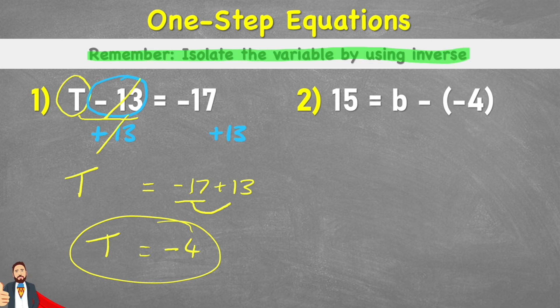Okay, let's look at this second question then. This time I have 15 equals b subtract negative 4. So this time my b, my variable, is connected to a subtract negative 4. So here's our subtraction. How do I get rid of the subtraction?